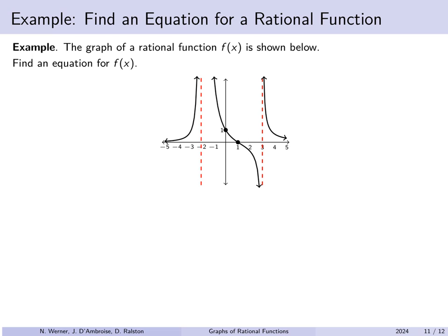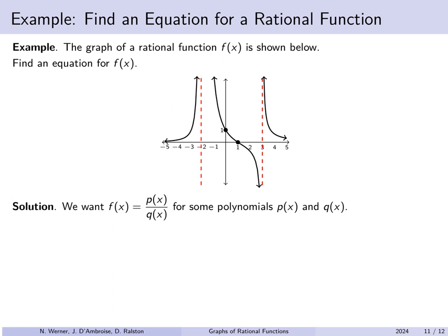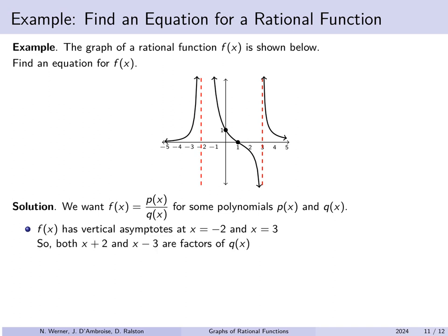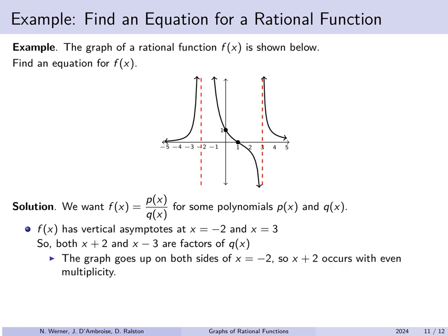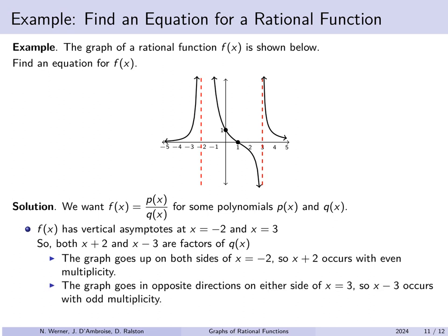Now let's work in reverse: given the graph of a rational function, find an equation that matches the information. We want f of x as p of x over q of x. There are vertical asymptotes at x equals minus 2 and x equals 3, so (x+2) and (x−3) must be factors of q of x. Looking at the asymptote at x equals minus 2, the graph goes up on both sides — same behavior — so x plus 2 must occur with even multiplicity. At x equals 3 the graph does opposite things on each side, so x minus 3 must have odd multiplicity.